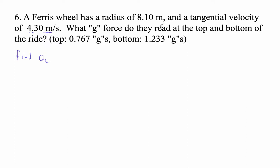Okay, so let's see. We've got a velocity and a radius. So I'm going to use a_c is v squared over r, right? Because this is our velocity, this is our radius. So 4.3 squared divided by 8.1.